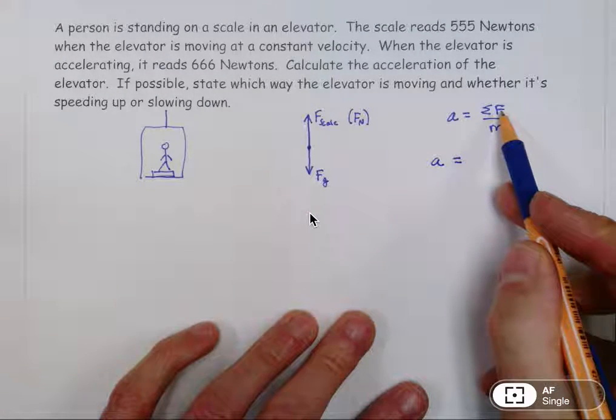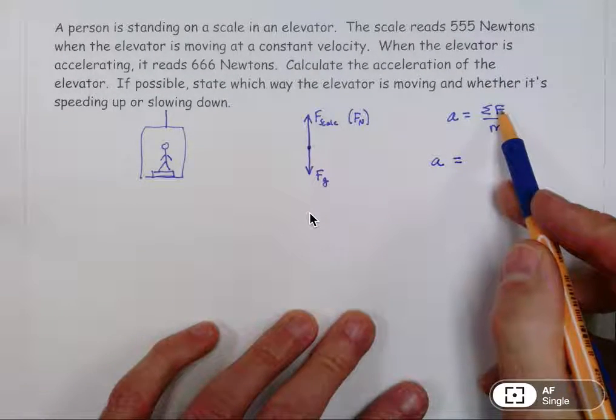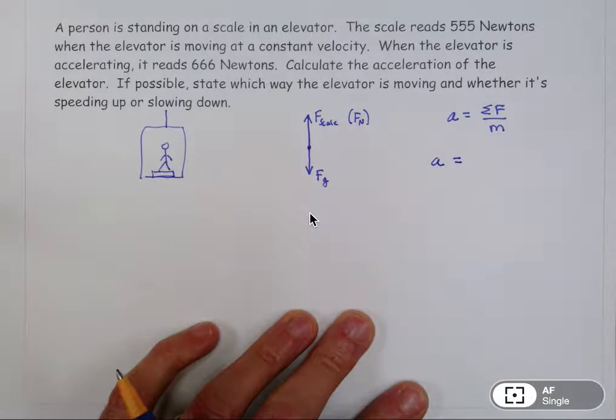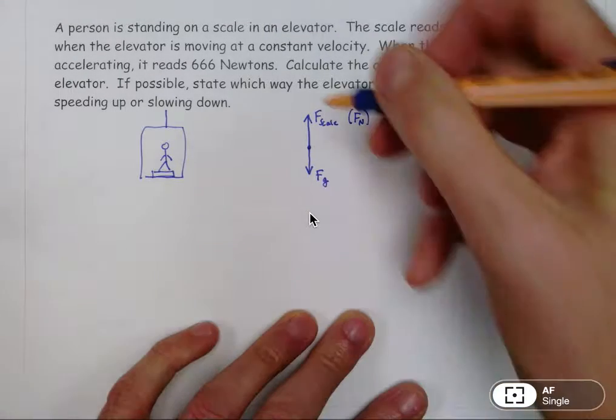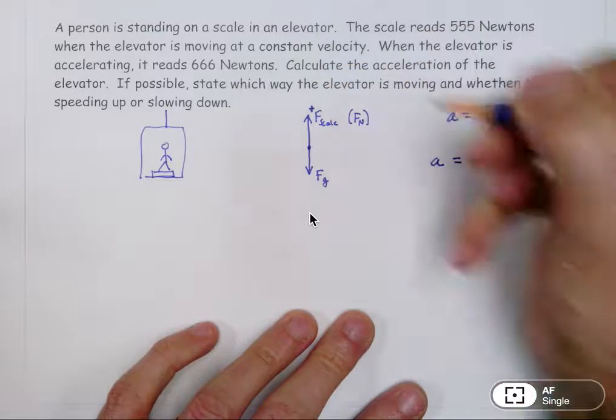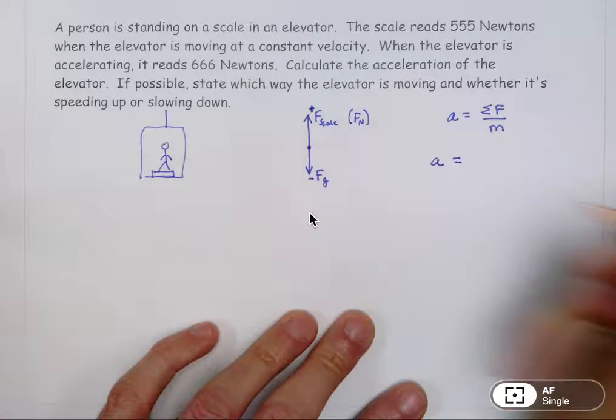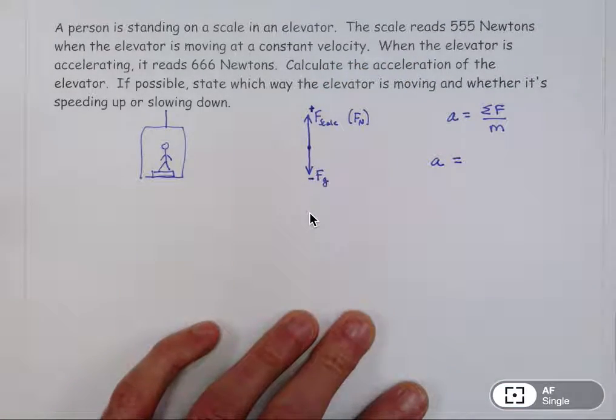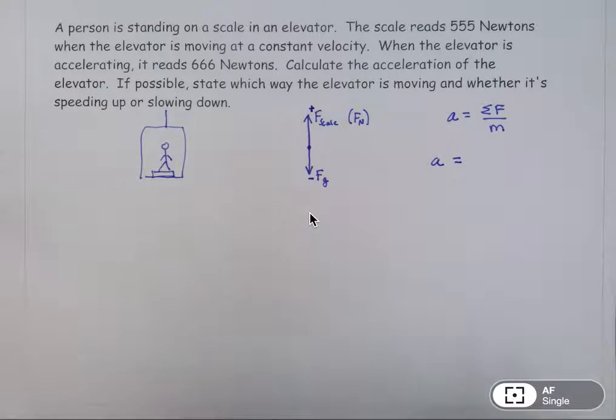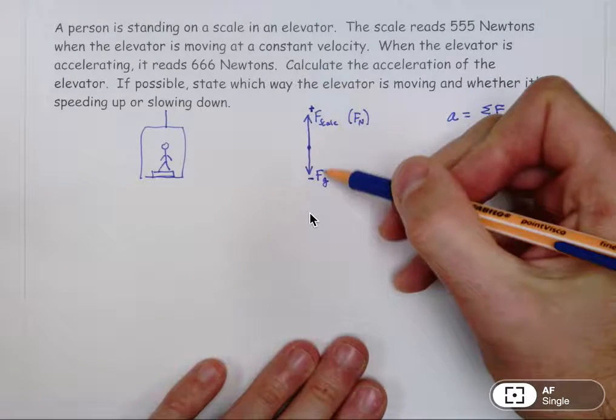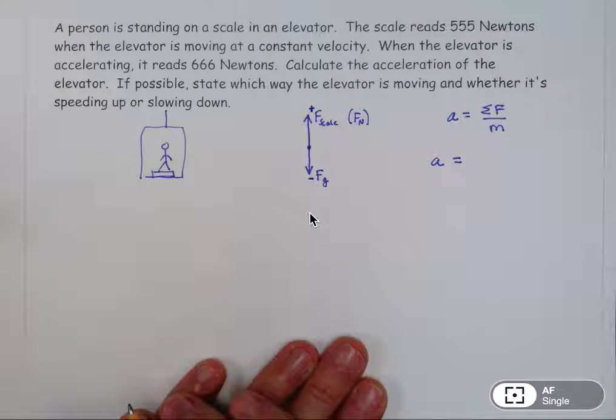So let's put in what we can. This symbol, the sum of the forces, means you are literally adding up the forces that are in your picture here. And I should mention that anything that points up we usually say is positive. Anything that points down is negative. So at some point we need to think about what are the numbers for these forces.